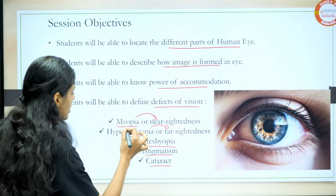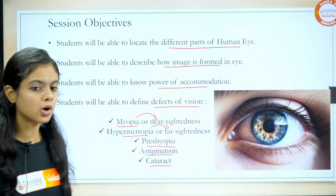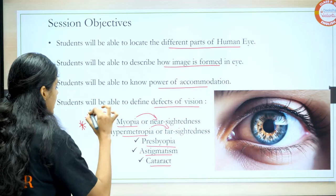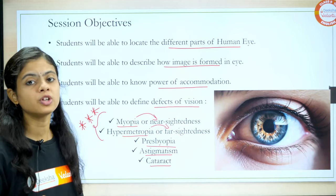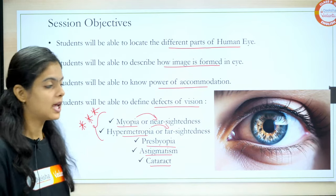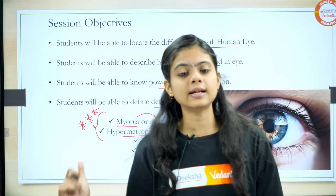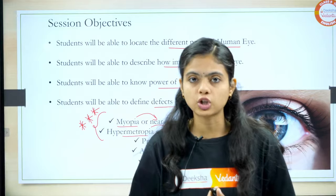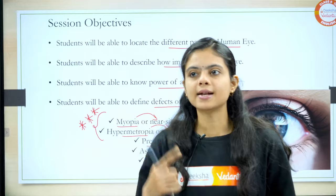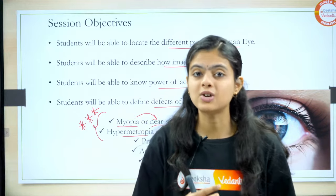So five defects we are going to study. The first two defects — myopia and hypermetrophia — are very important concepts in defects of vision. There are still more concepts including refraction through a prism, formation of rainbow, twinkling of stars, sunset, and why the sky is blue. All these concepts will also be covered in this session.